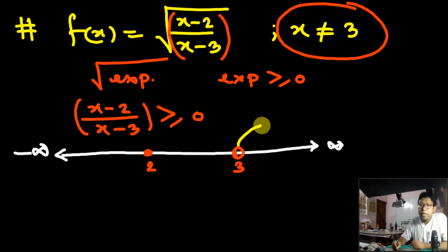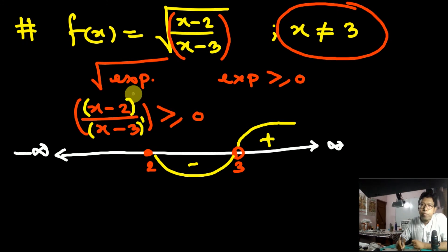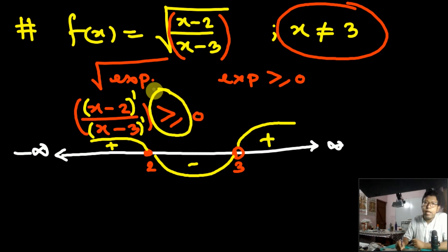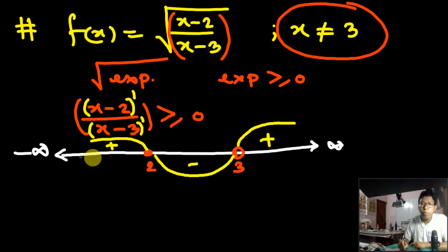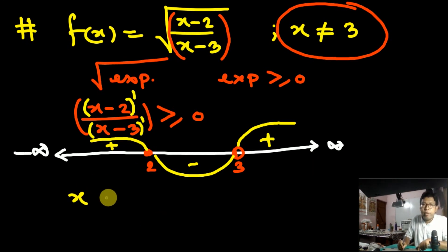The interval (3, ∞) is positive. At critical point 3 the factor is (x−3) with power 1 — odd — so the sign changes to negative on (2, 3). At critical point 2 the factor is (x−2) with power 1 — odd — so the sign changes again to positive on (−∞, 2). Since the inequality is ≥ 0, we take the positive intervals: (−∞, 2] and (3, ∞).